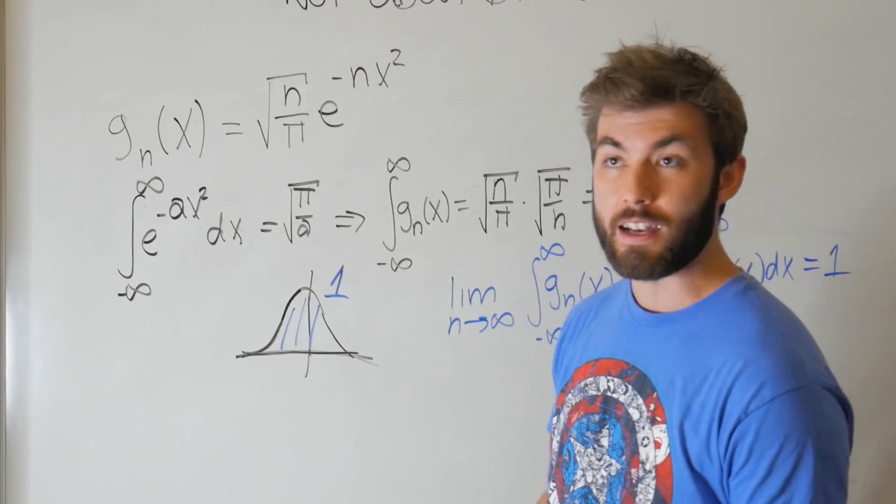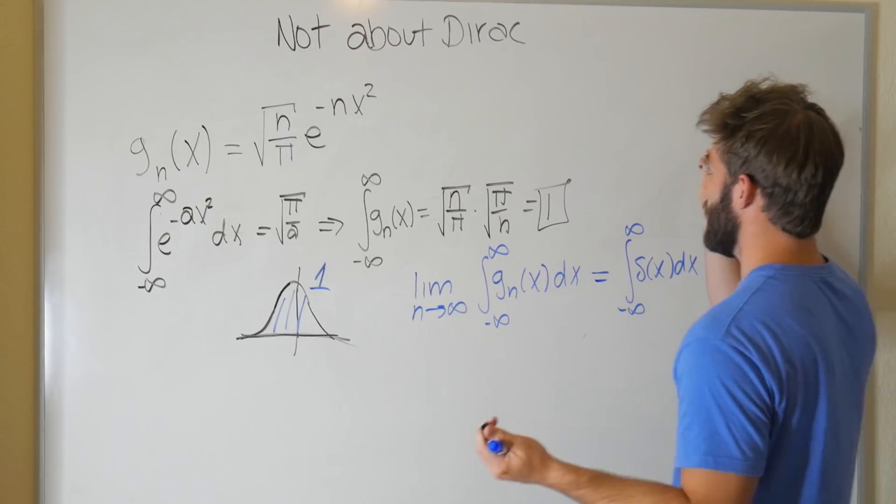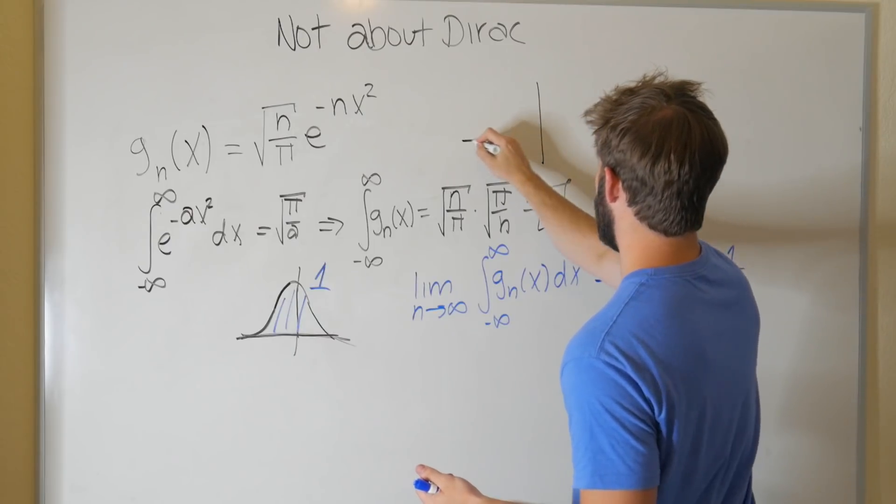So this is why the integral of the delta function is equal to one, or at least it's one way of explaining it. And what's really useful about thinking of the delta function in terms of this is, if we draw out our delta function real quick,